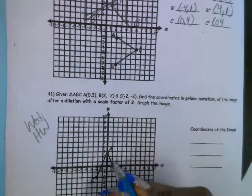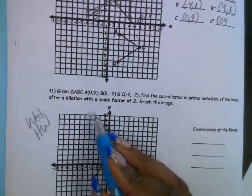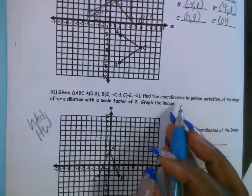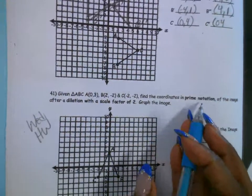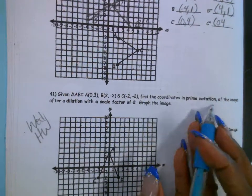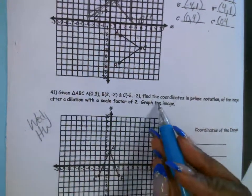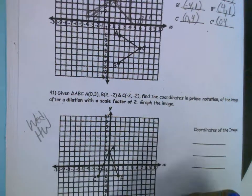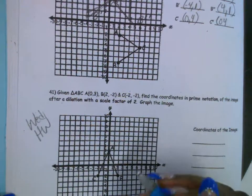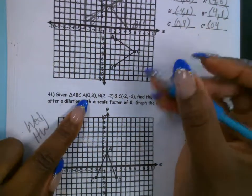So given A, B, C — these are your ordered pairs. Find the coordinates. Prime notation of the image. Dilation. So we got to dilate by 2, which means we multiply everything by 2.